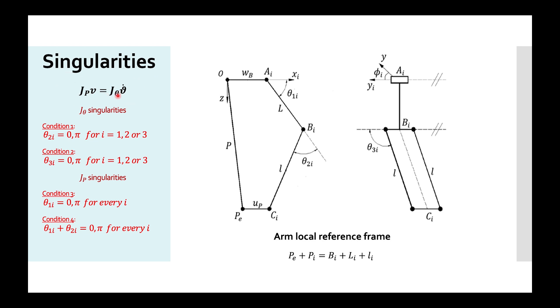In this way, it is possible to identify the singularities by analyzing the two-part Jacobian. Starting from J theta, putting its determinant equal to zero, these two conditions are found. In a similar way, analyzing Jp, also these two conditions can be found.